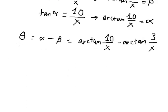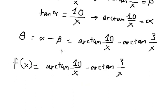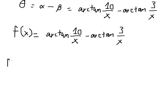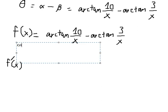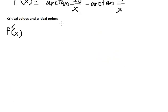Now I will write this as f(s) = arctan(10/s) minus arctan(3/s). We want to find the maximum, so we need to find the derivative f'(s) first, because we need to find the critical values and critical points.